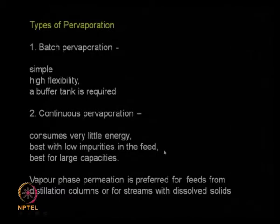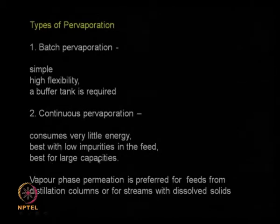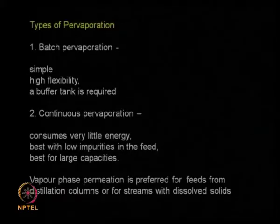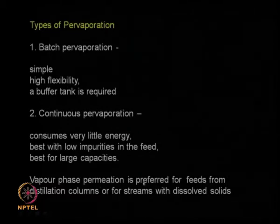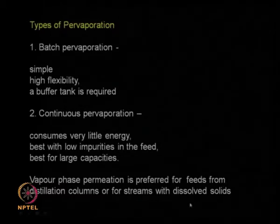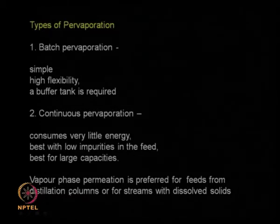Continuous pervaporation is very good for low impurity levels in the feed — you want to remove only a small amount of impurity from a large quantity of stream. It is best for large capacity: a large quantity of a stream needs to be processed with very little impurity to remove. Nowadays this type of pervaporation is even being preferred in distillation column systems, especially where dissolved solids are involved, and pervaporation can be combined with distillation columns.